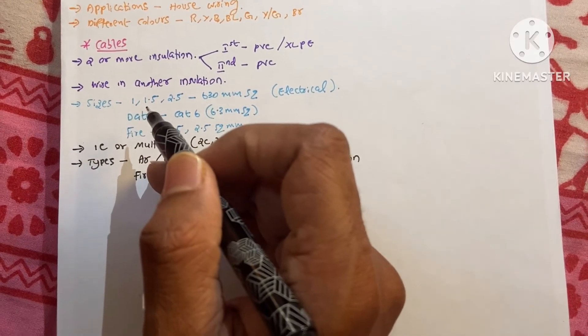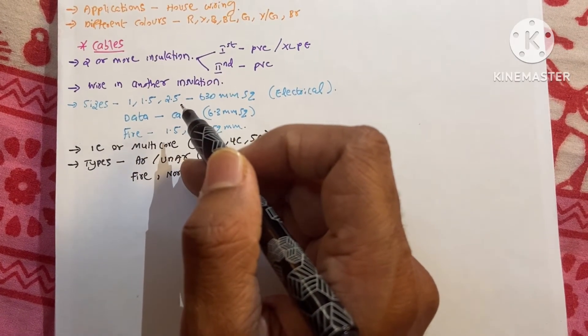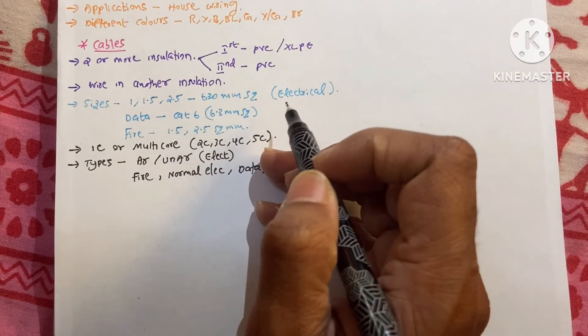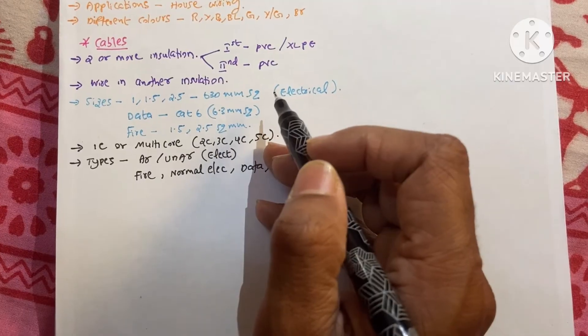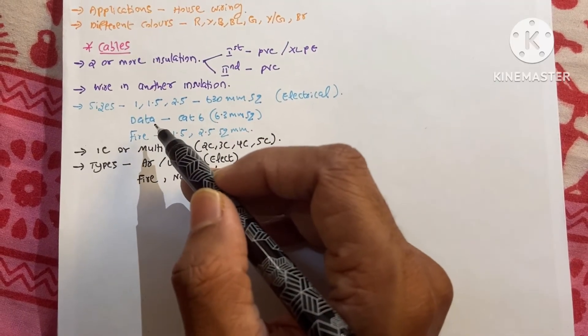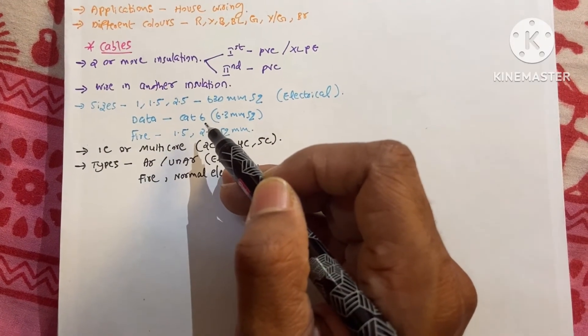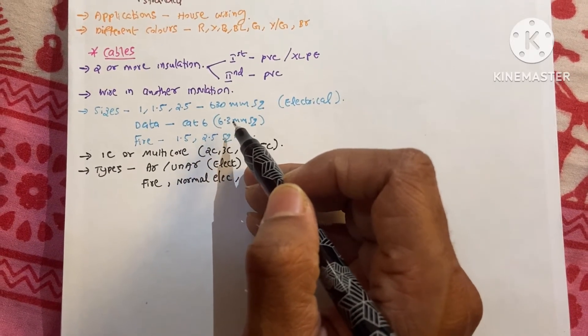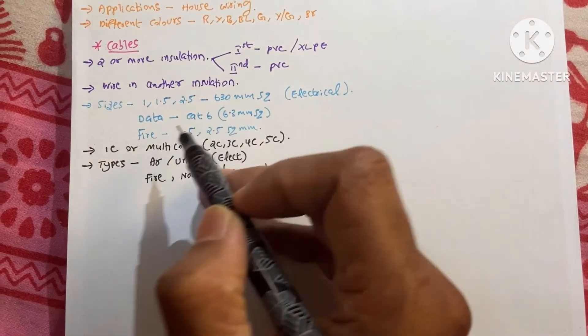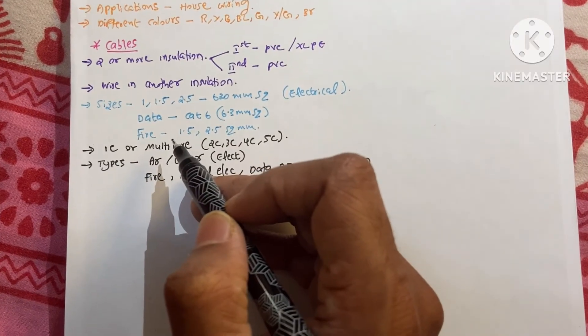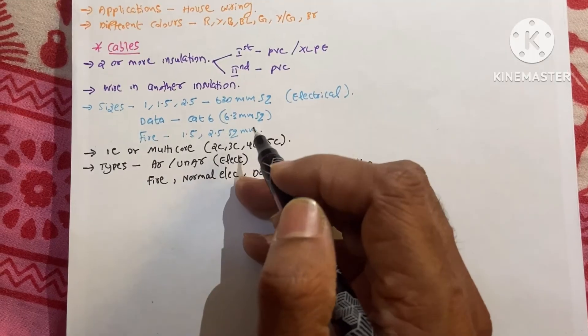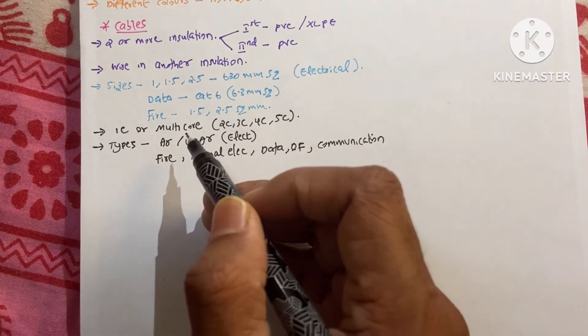And about the sizes. Sizes are 1, 1.5, 2.5, up to 630 mm square cables are available. And it's all in electrical. And when we talk about the data, we can see the cat-six cable and normal cat-six cable diameter is 6.3 mm square. And there are five rated cables whose area is 1.5 and 2.5 mm square.